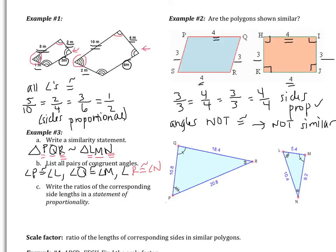Part C says write the ratios of the corresponding side lengths in a statement of proportionality — all that means is list the corresponding sides. PQ corresponds to LM (first and second vertices), QR corresponds to MN (second and third), and PR corresponds to LN (first and third). So: PQ/LM = QR/MN = PR/LN. That just means all these pairs of sides have the same ratio.